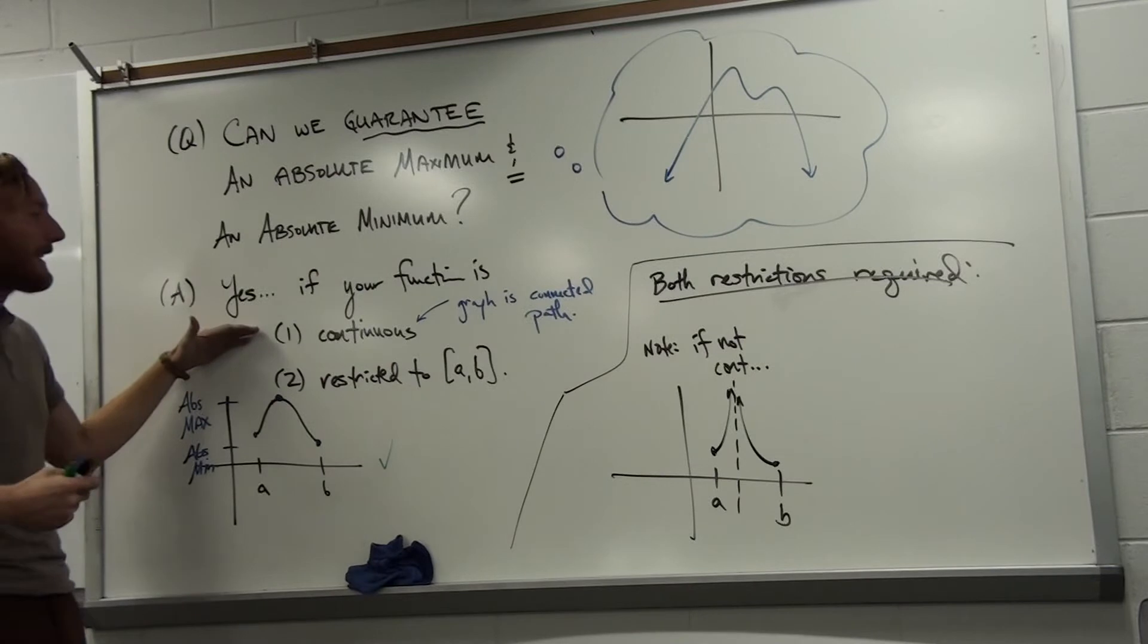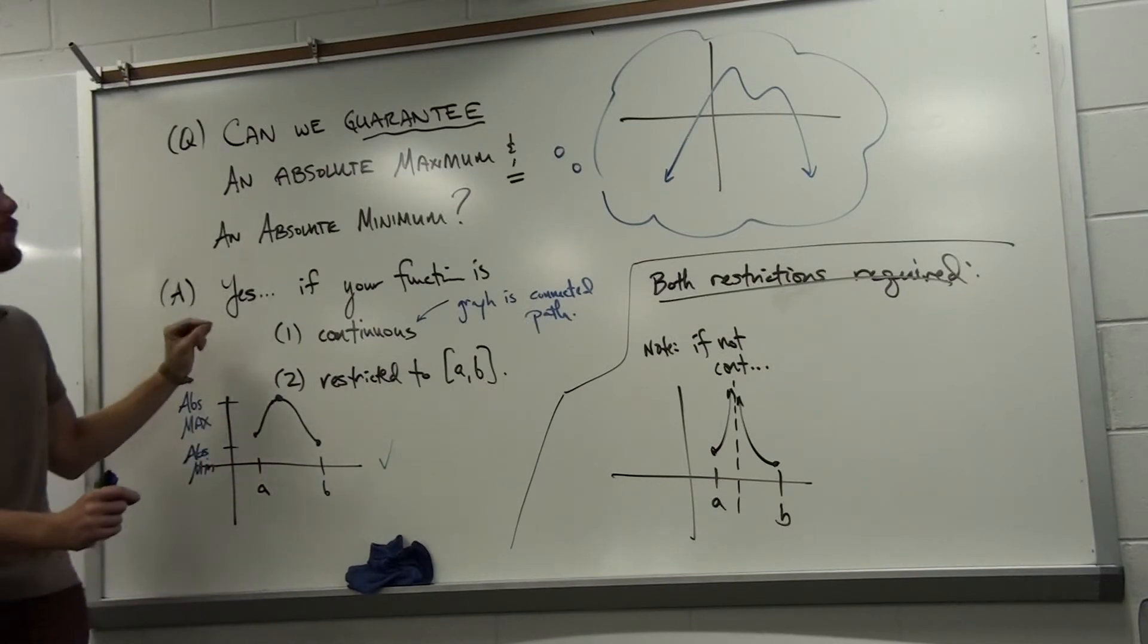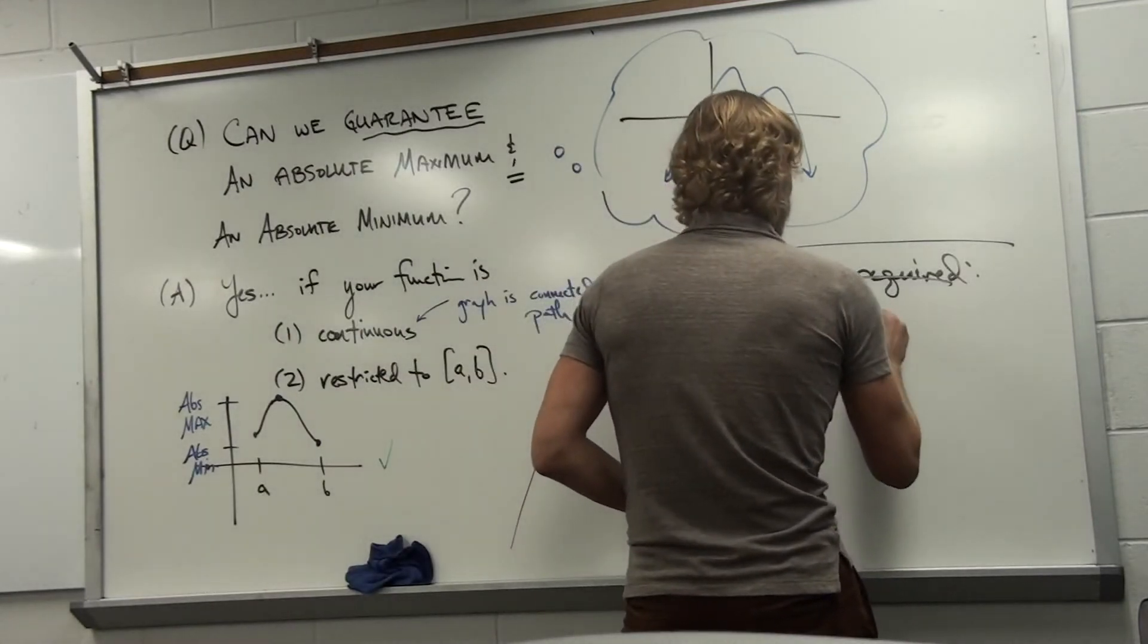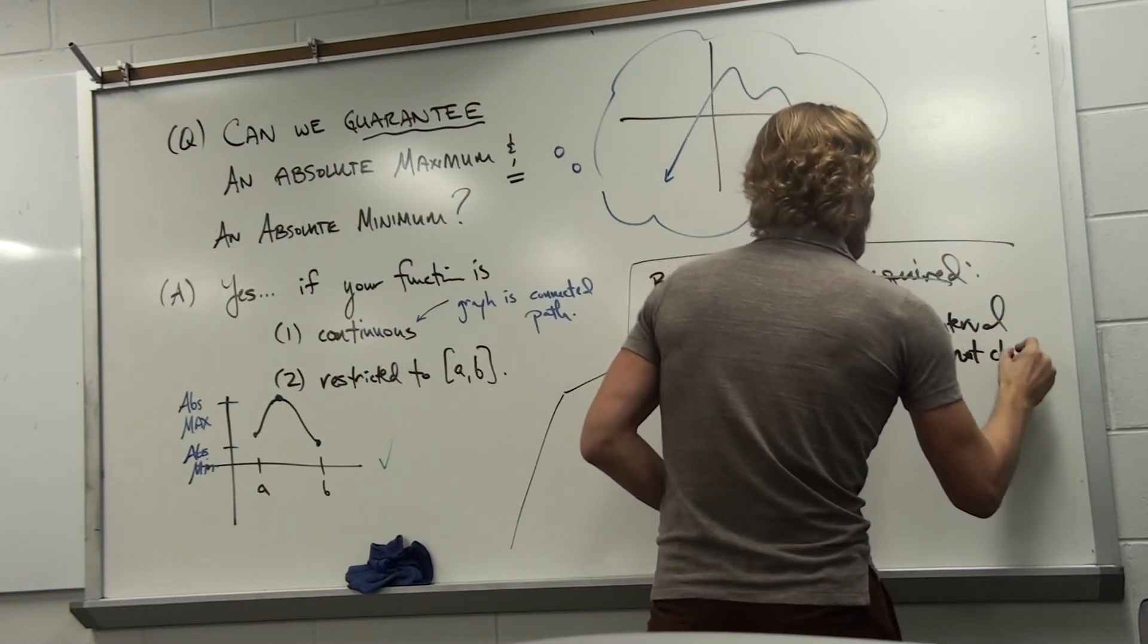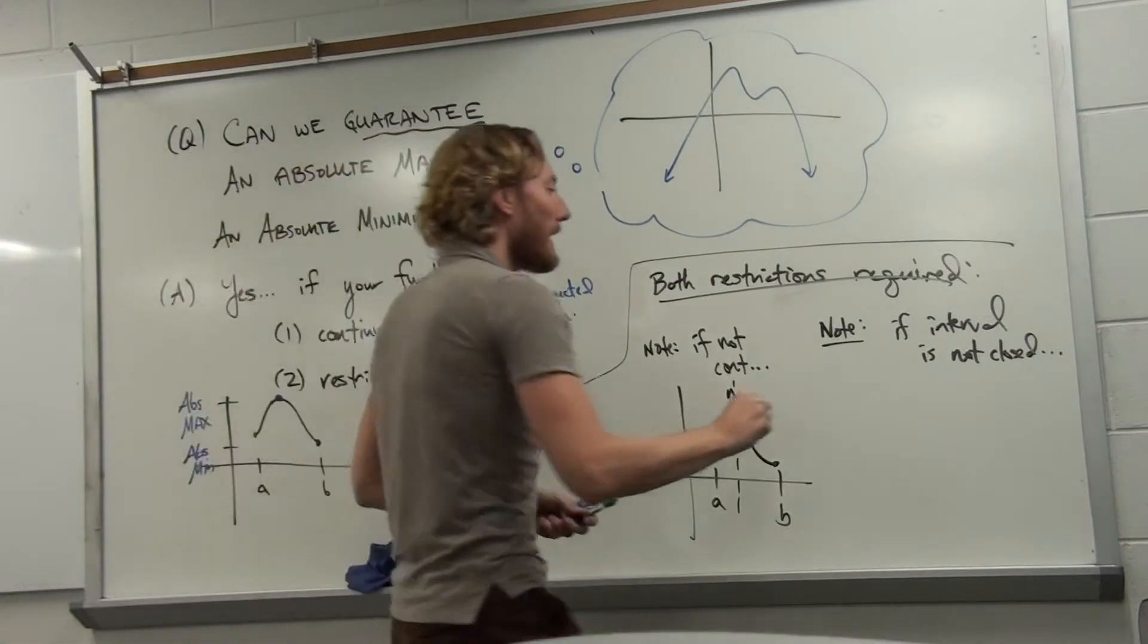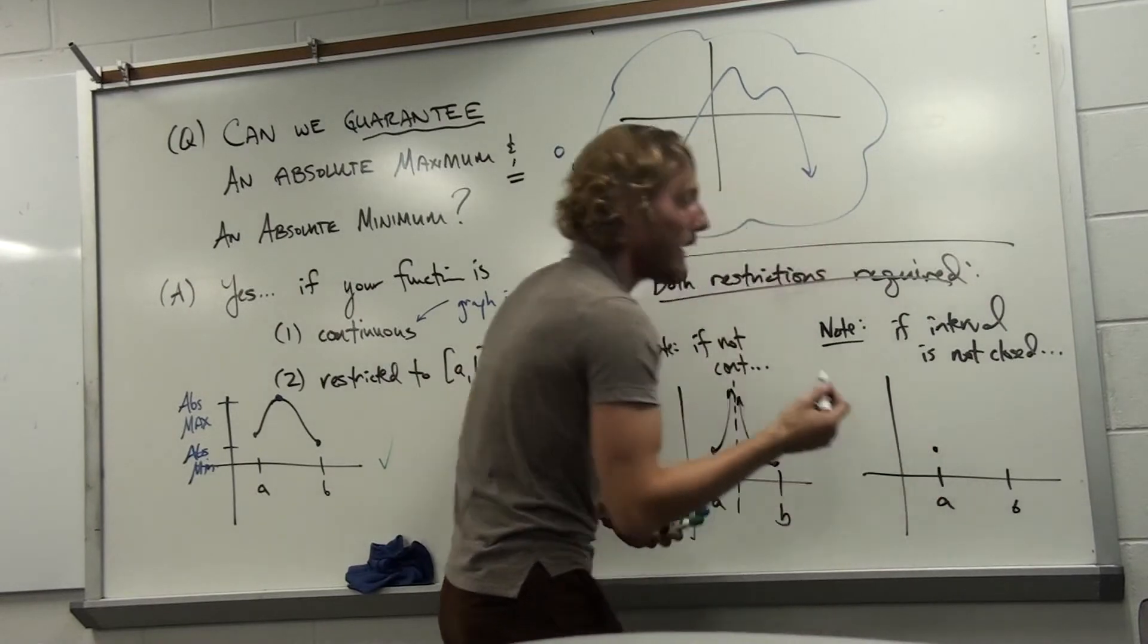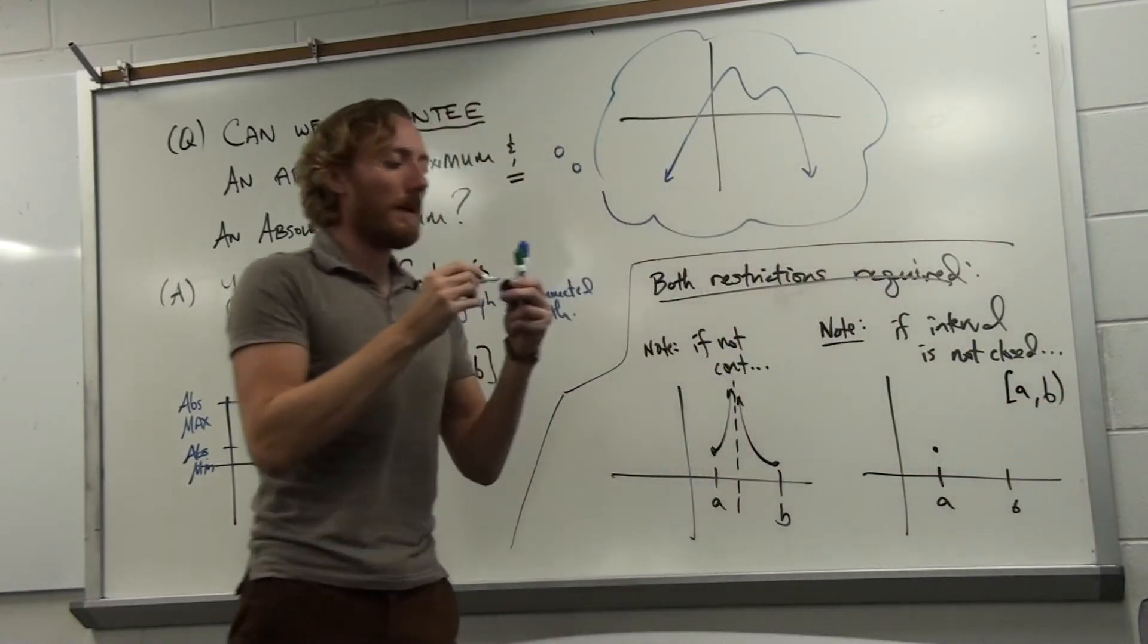However, if you restrict the function to being continuous, you can have no asymptotes. You have to be a connected path, and on your way from a to b, you could have only got so far up and so far down. We also had this restriction about [a,b] being closed. If the interval is not closed - where you have an open boundary at a or b - that could become a problem. Let's say, for example, the boundary is open at b. We'll close the boundary at a and demand the function exists at a, but hypothetically we're dealing with the interval (a,b) where b is not included.